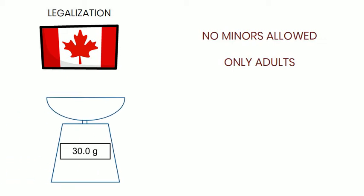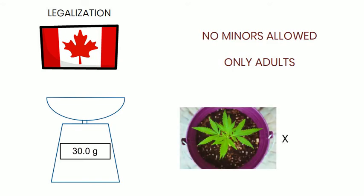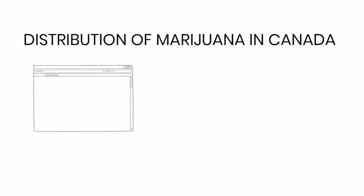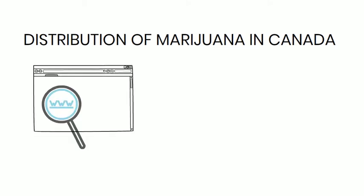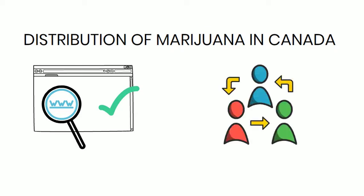If adults decide they want to grow marijuana in their homes, they are only allowed to grow up to 4 plants in each household, not per person. However, homegrown plants are only meant for personal use and not for selling. In Canada, weed must be legally bought through private licensed stores or through provincially regulated websites. Other than that, it's okay for adults to share weed, but it is illegal to sell marijuana without a license. Additionally, adults are not allowed to give marijuana to minors.